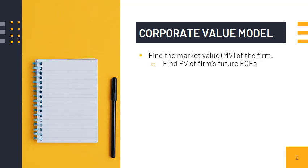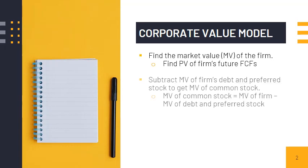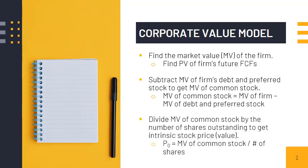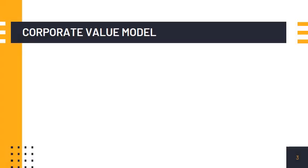Using the Corporate Value Model, we compute the market value per stock as follows. First, we solve for the market value of the firm by computing the present value of free cash flows. Second, we deduct the market value of debt and preferred stock to get the market value of common stock. We then divide it by the number of common shares to get the market value per stock.